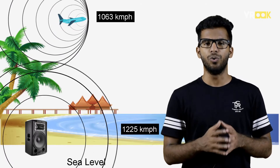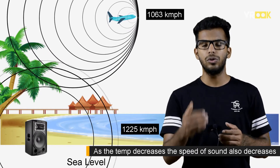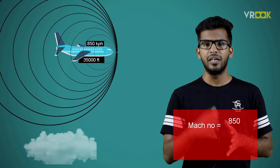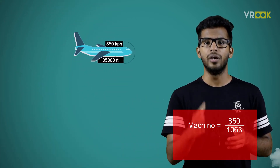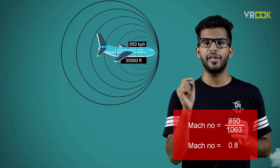The speed of sound varies with temperature. As the temperature decreases, the speed of sound also decreases. To understand Mach number and its real-life application, consider a commercial flight traveling at 850 kilometers per hour at an altitude of 35,000 feet. The Mach number of the flight is given as 850 divided by 1063, where 1063 is the speed of sound at 35,000 feet. The Mach number is approximately 0.8.